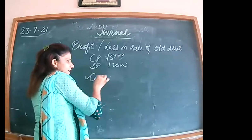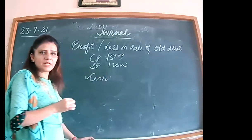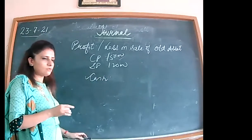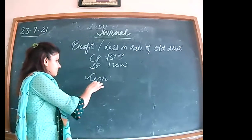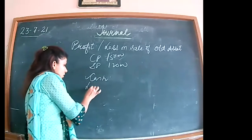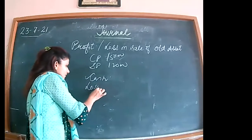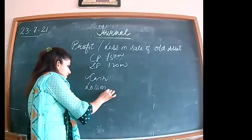Cash has come in — what comes in is debited under the real account rule. This is the rule of loss on sale of assets: debit it.